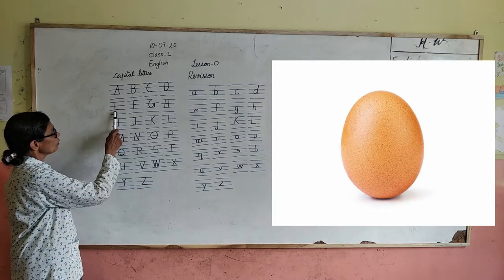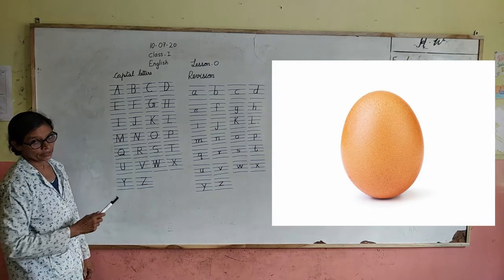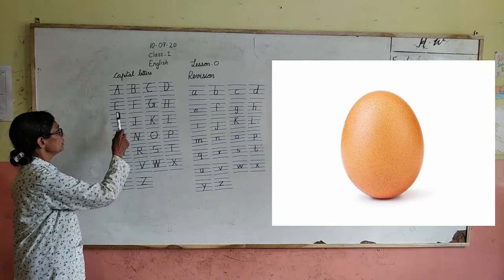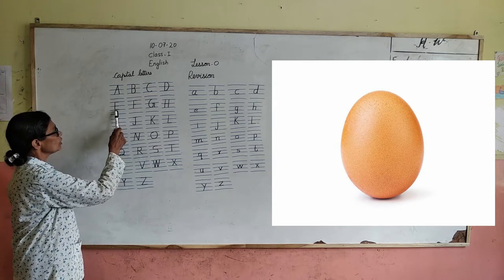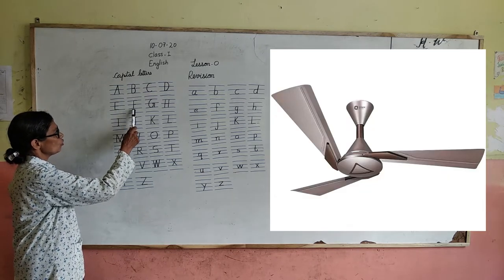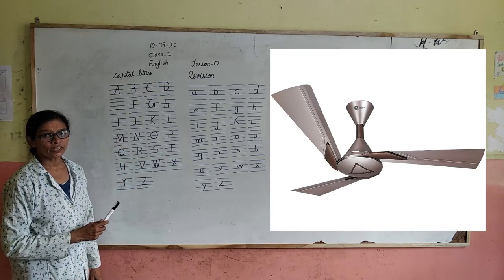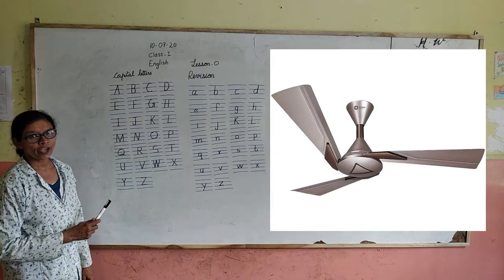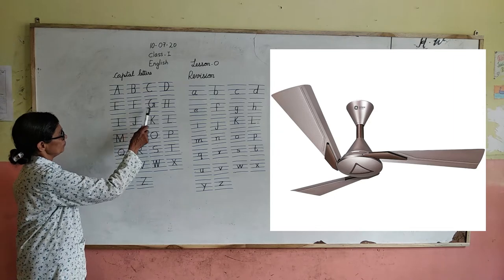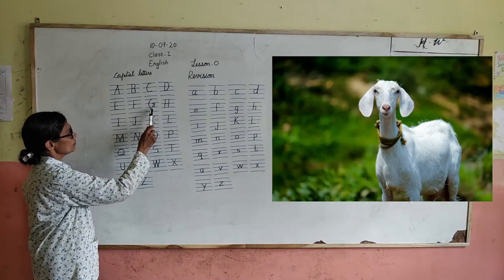E for elk — E-L-K, elk. F for fan — F-A-N, fan.